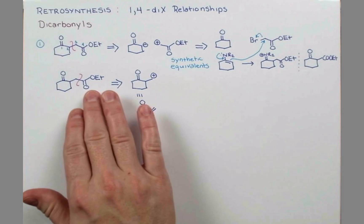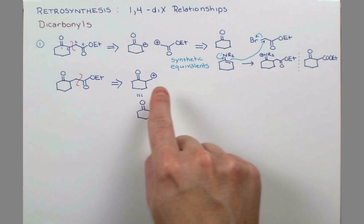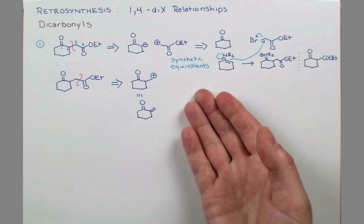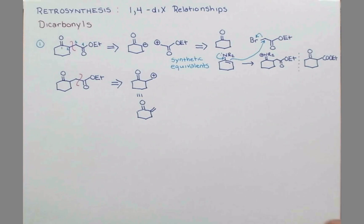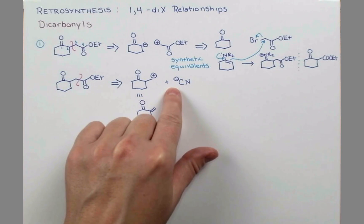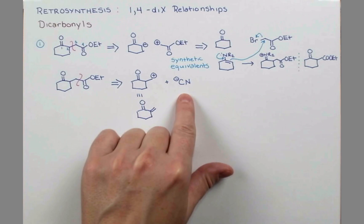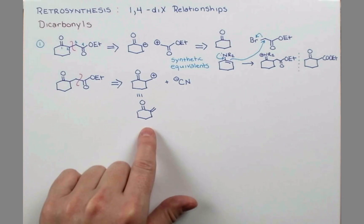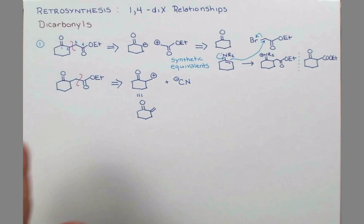This can be envisioned as coming from the enone. Now what is going to be our equivalent of this? We need a synthon that's the equivalent of a one carbon negative. That's actually going to be the cyanide anion. This is the equivalent of one carbon with a negative charge on it. So we could add cyanide in a conjugate addition fashion. But how are we going to get the ester out of this? It's actually a pretty smooth reaction.